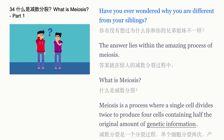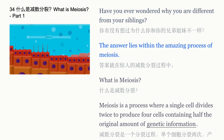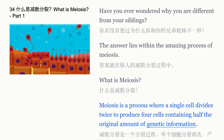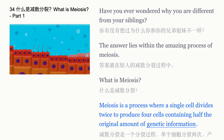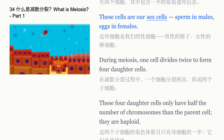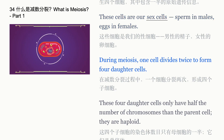Have you ever wondered why you were different from your siblings? The answer lies within the amazing process of meiosis. Meiosis is a process where a single cell divides twice to produce four cells containing half the original amount of genetic information. These cells are our sex cells — sperm in males and eggs in females.